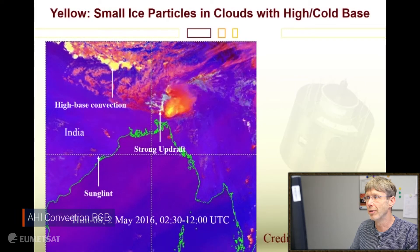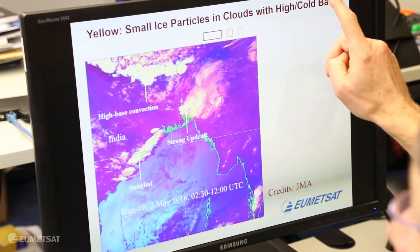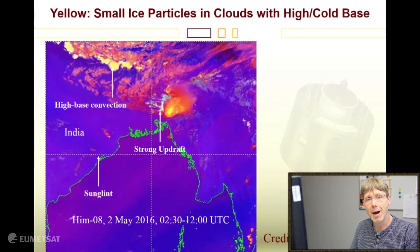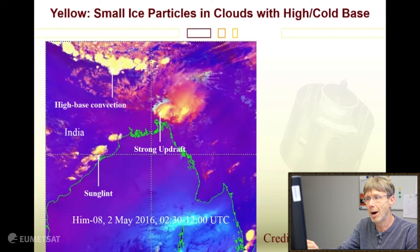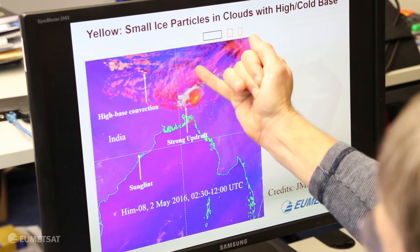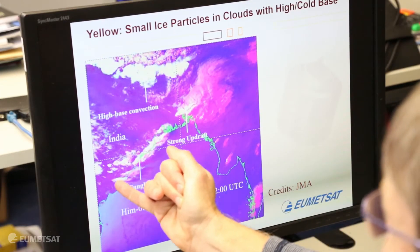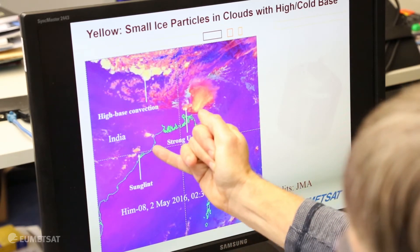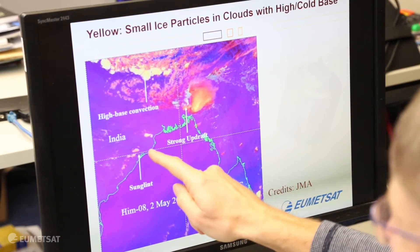Yellow can also be the case for small ice particles in clouds with high cold bases, but not strong updrafts. The best example is from northern India and Nepal where we have the Himalayas. These very yellowish convective clouds developing during daytime have nothing to do with strong updrafts — it's related to very high, cold cloud bases. We also have a severe convective storm over Bangladesh with yellow from a strong updraft, and a sun glint area over the ocean and partly over clouds in India also producing yellowish color. So this is an interesting example because we have three different yellows: one from high cold cloud base, one from strong updraft, and one from sun glint.